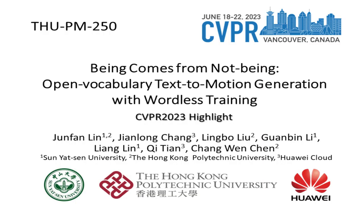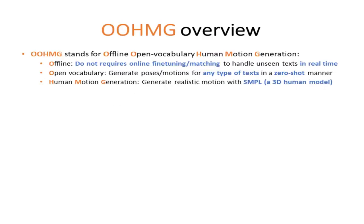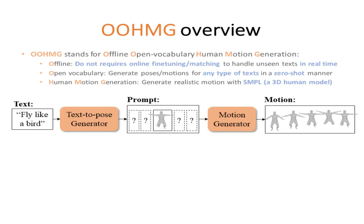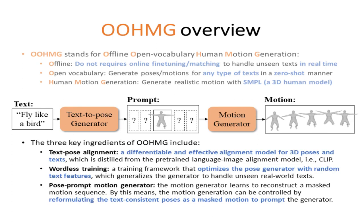It's our pleasure to present our highlight paper at CVPR 2023: Open Vocabulary Text-to-Motion Generation with Wordless Training. We propose a novel offline open vocabulary human motion generation method, abbreviated as OOHMG. Our method does not require online fine-tuning or matching to handle unseen texts in real time. By learning in a zero-shot manner, our method can generate poses or motions for any type of text. Our method generates human motion based on a realistic cross-platform 3D human model, making the generated content editable and visually plausible. Key ingredients include Text Pose Alignment (TPA), a differentiable alignment model for 3D poses and texts; Wordless Training, which optimizes the pose generator with random text features; and a pose-prompt motion generator that synthesizes a complete motion from given text-consistent poses.